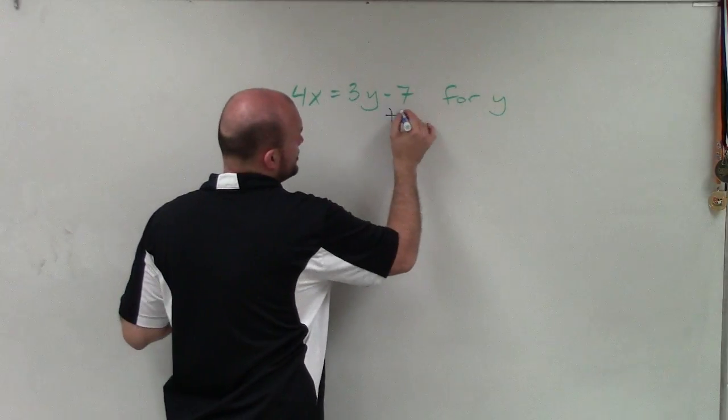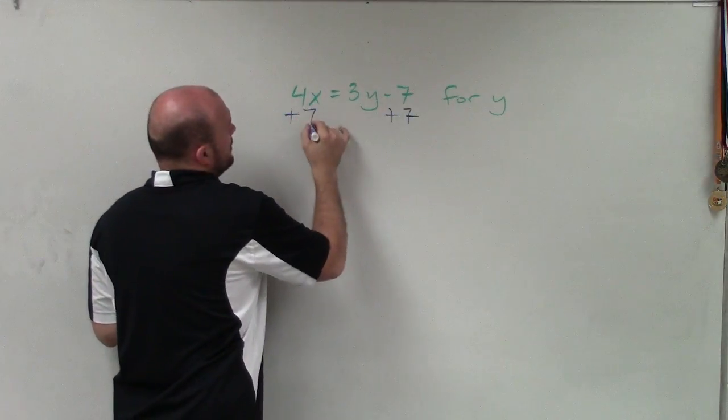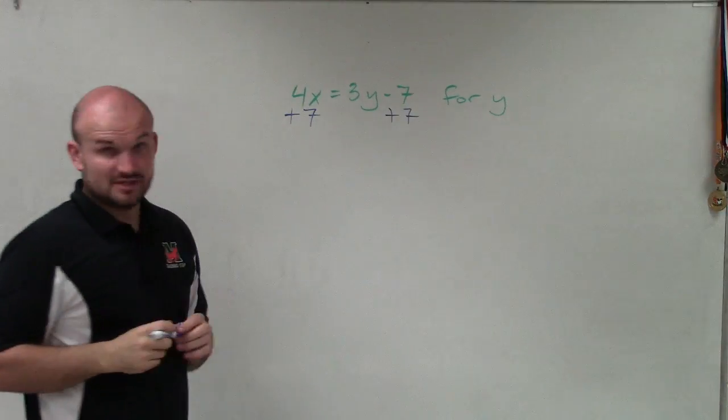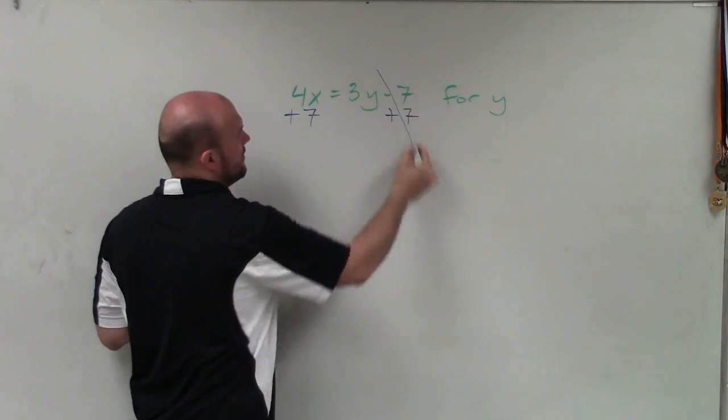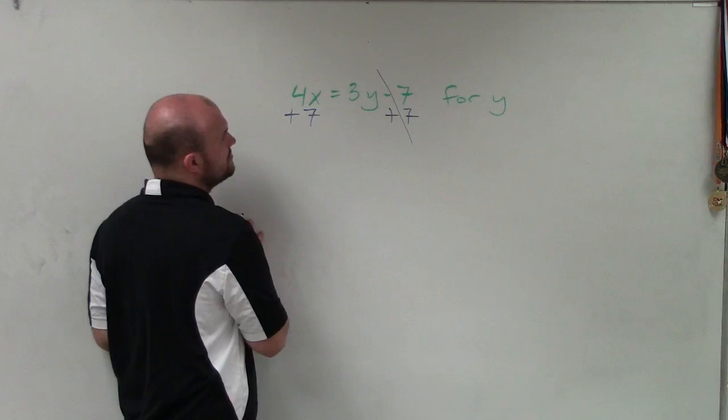So the first thing I'm going to do is undo subtraction of 7. So I'll add a 7 on both sides using the addition property of equality. That now goes and combines to 0.